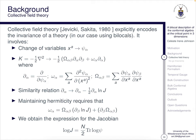Let's have a look at the tools we're going to use. On the O(N) vector side, we're going to use collective field theory described by Jevicki and Sakita in 1980, which explicitly encodes the invariance of a theory. This involves a change of variables, describing the kinetic term K in terms of this change, using a similarity relation, requiring hermiticity, and from that we're able to determine what the Jacobian should look like.